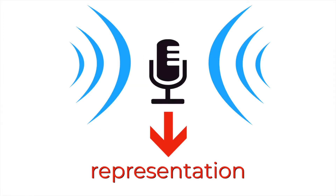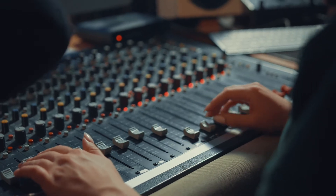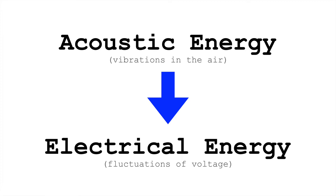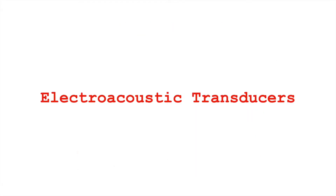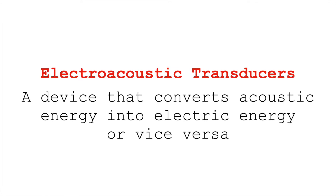So let's talk a little bit about this conversion of sound into representations of sound, and the considerations that go into the choices we make when recording. The first thing that we do is we take acoustic energy and we convert it into electrical energy, into voltage. We can do this with microphones. Different microphones do this conversion in different ways, but they're all serving as electro-acoustic transducers. A transducer is something that changes one kind of energy into another. An electro-acoustic transducer is changing acoustic energy into electrical energy, or vice versa.